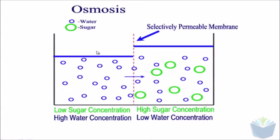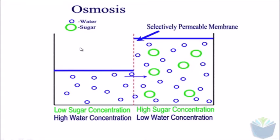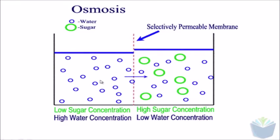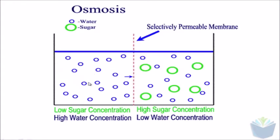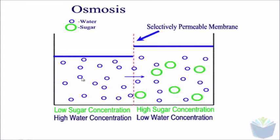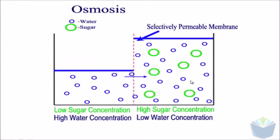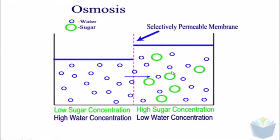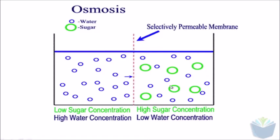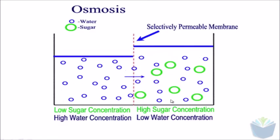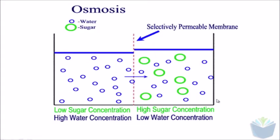Here you've got a diagram showing you the net flow of water moving from left to right. The reason being is that here you've got an area of high water concentration to an area of low water concentration, and the reason this area is lower is because there's a higher sugar concentration here.